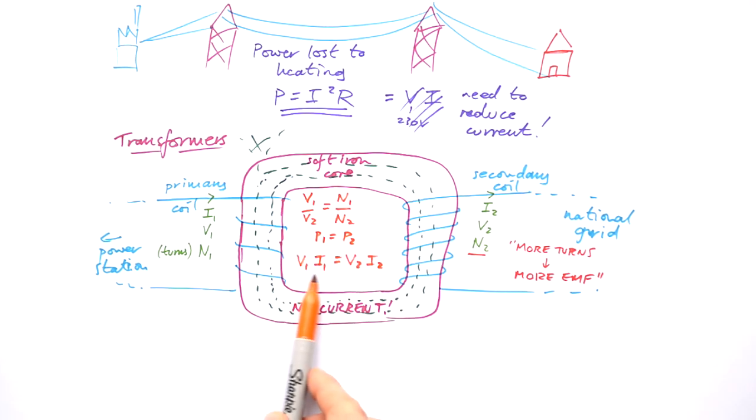If that's the case, then power is voltage times current, then the voltage times the current in the primary coil must equal voltage times the current in the secondary coil.